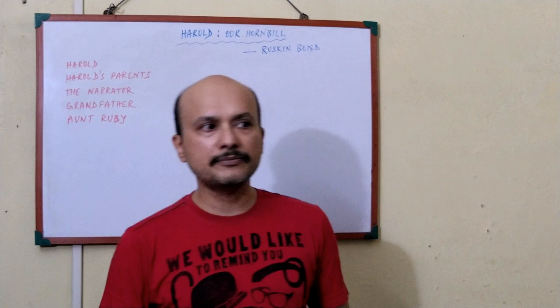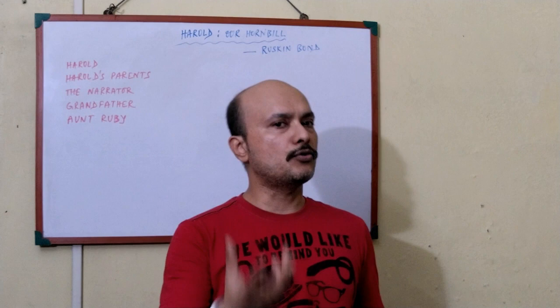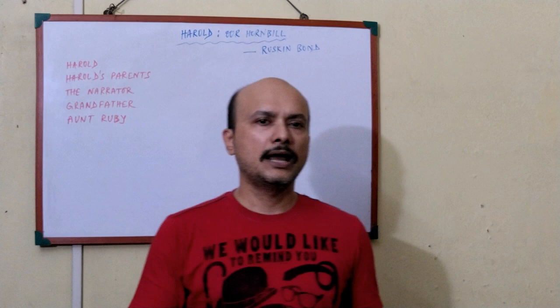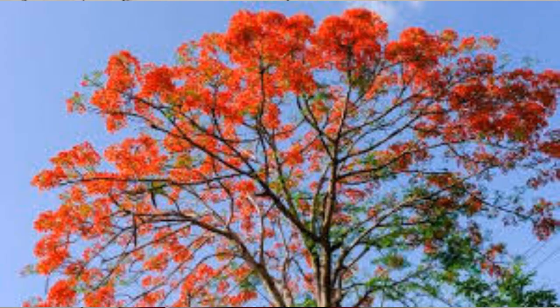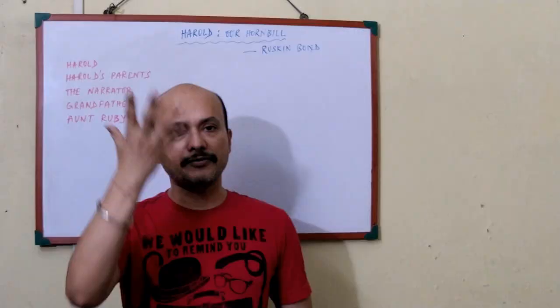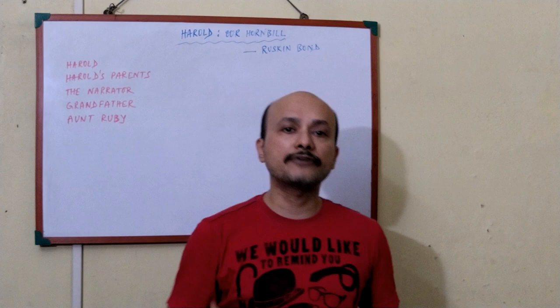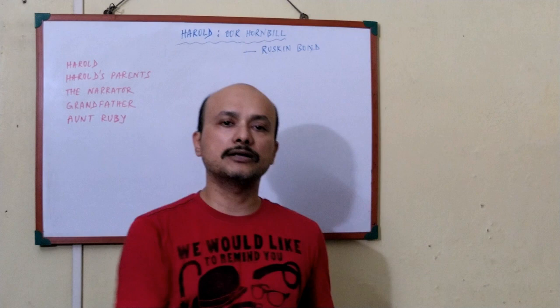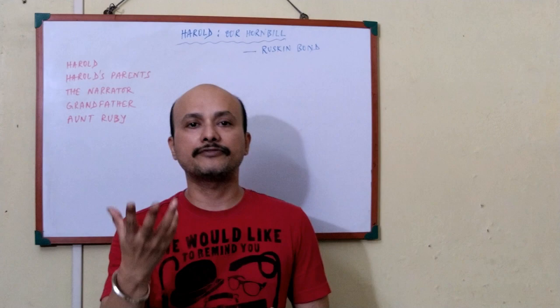In January, long before the flame tree flowered — now the flame tree refers to the gulmohar tree in India. It is called the flame tree because when it flowers, the flowers are red, orange, and yellow, giving it the appearance of being on fire. That is why it is always referred to as the flame tree, and words like flaming, ablaze are used with reference to the gulmohar tree.